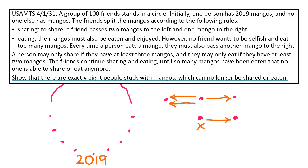Show that there are exactly eight people stuck with mangoes, which no longer can be shared or eaten. The crux of the problem is this weird process. At every step, we either have a person move one mango right and two mangoes left, or they eat a mango and move a mango right. And yet somehow, through this chaotic process, we always end up with eight mangoes in the end. So how do we even start?